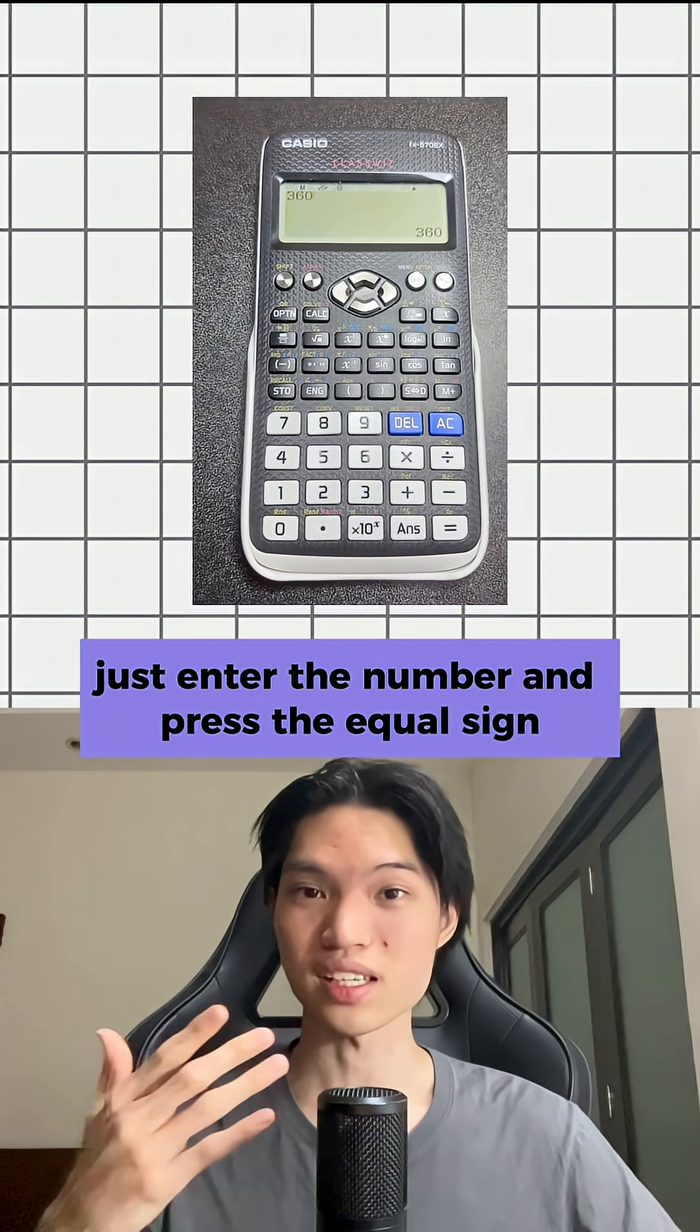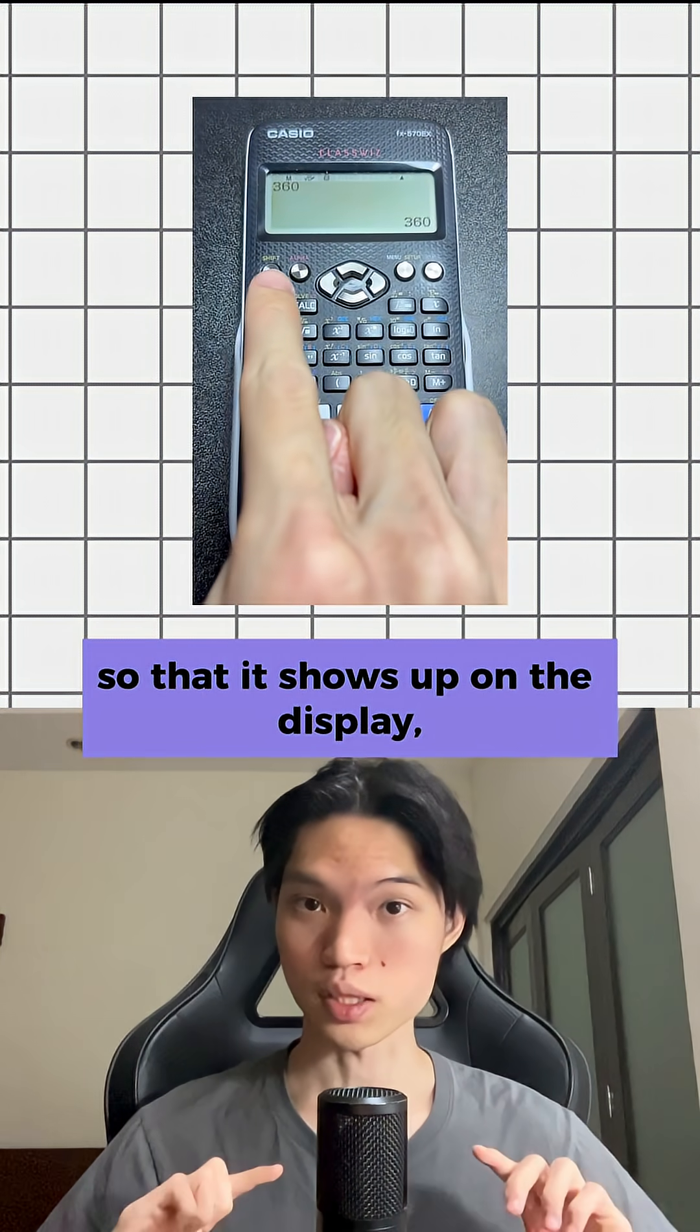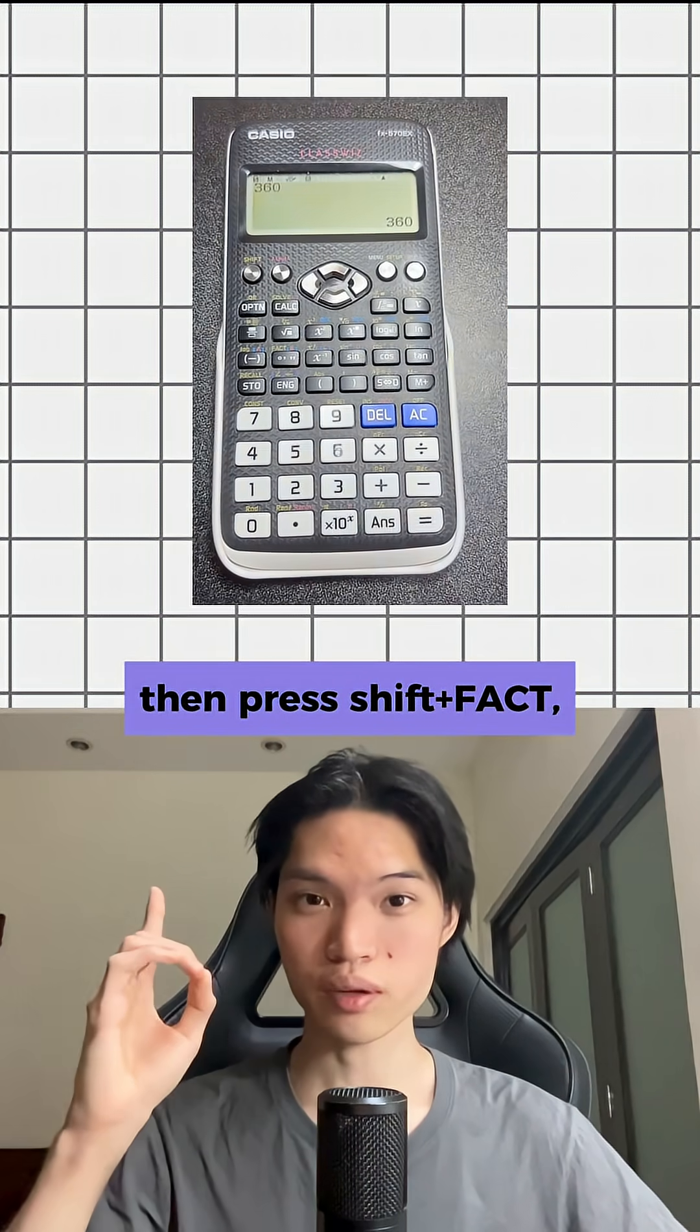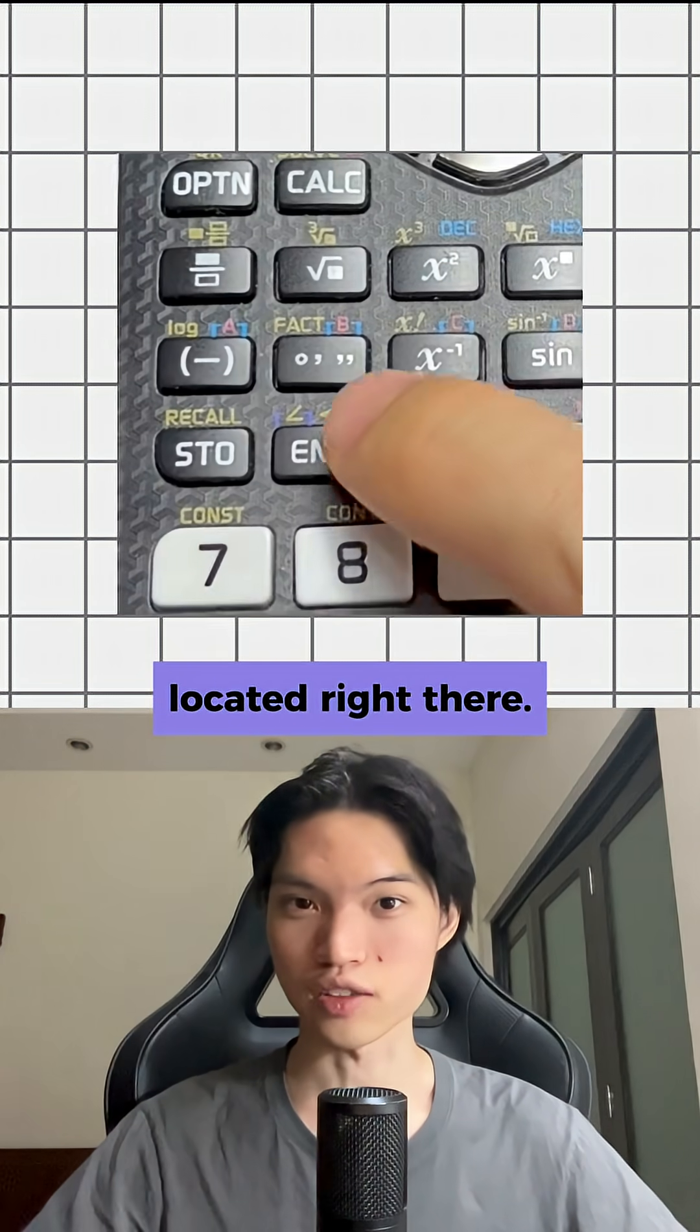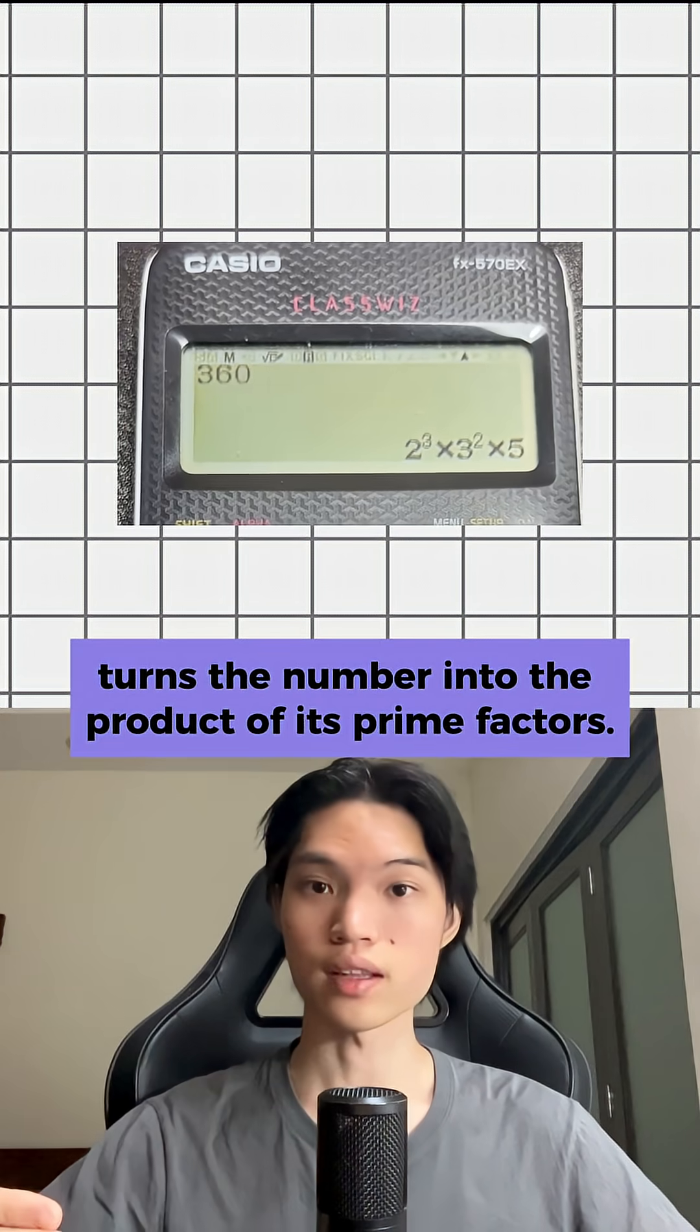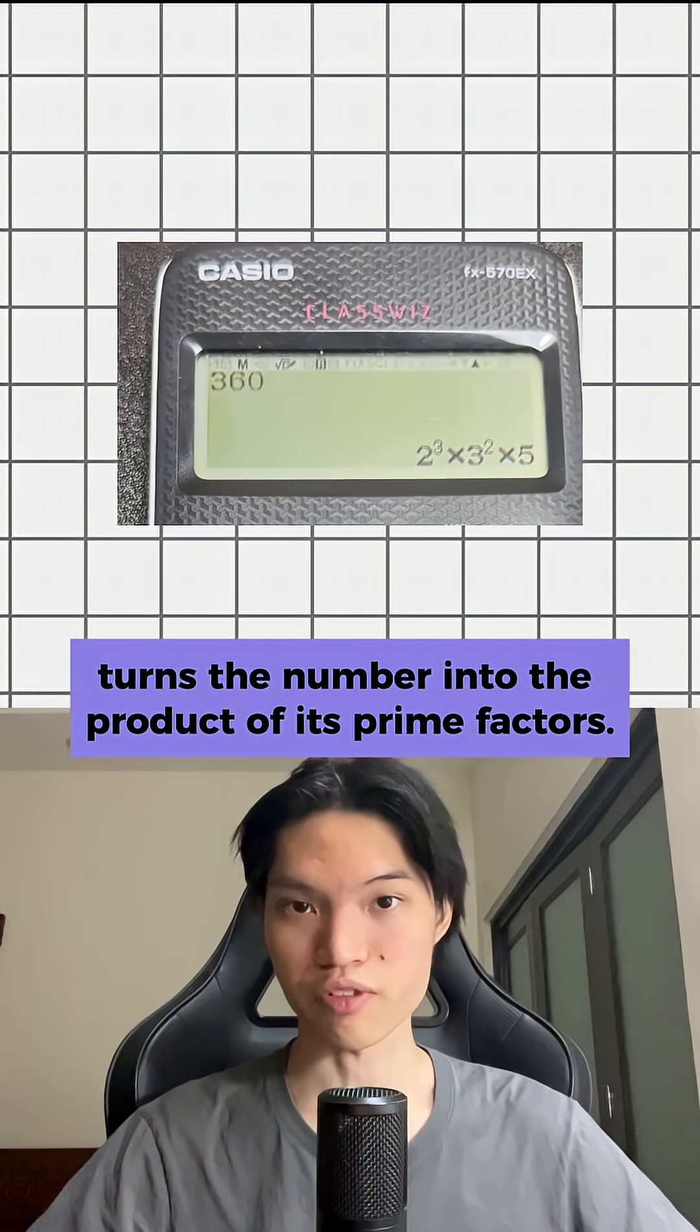Just enter the number and press the equal sign so that it shows up on the display, then press shift plus f-a-c-t located right there. That straightaway turns the number into the product of its prime factors.